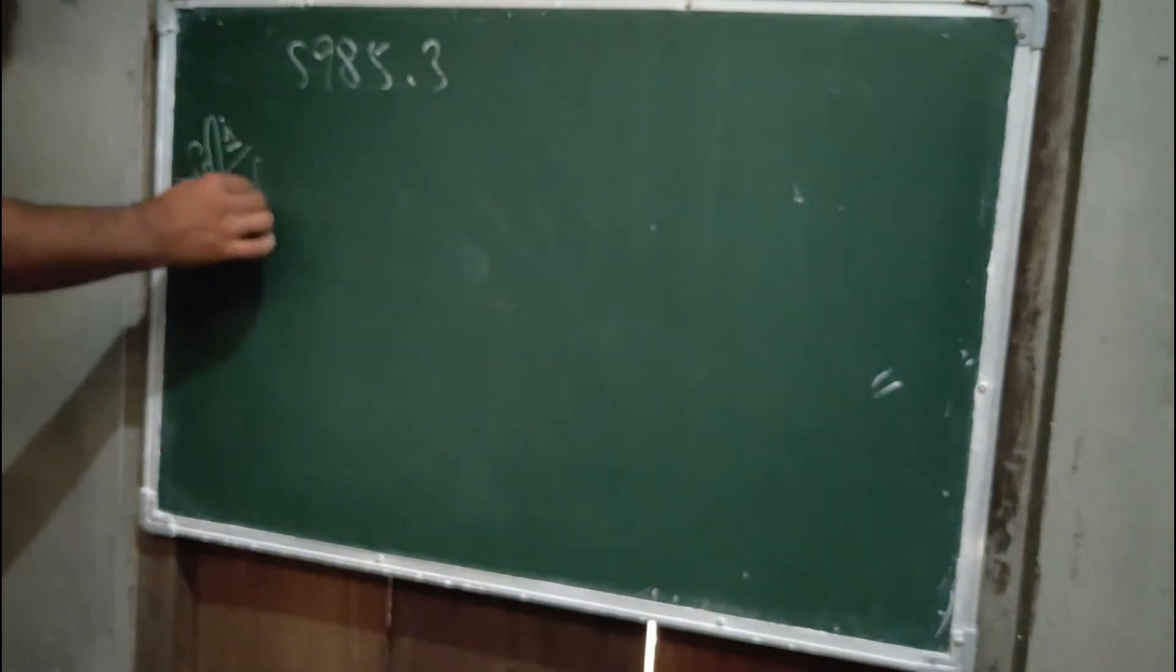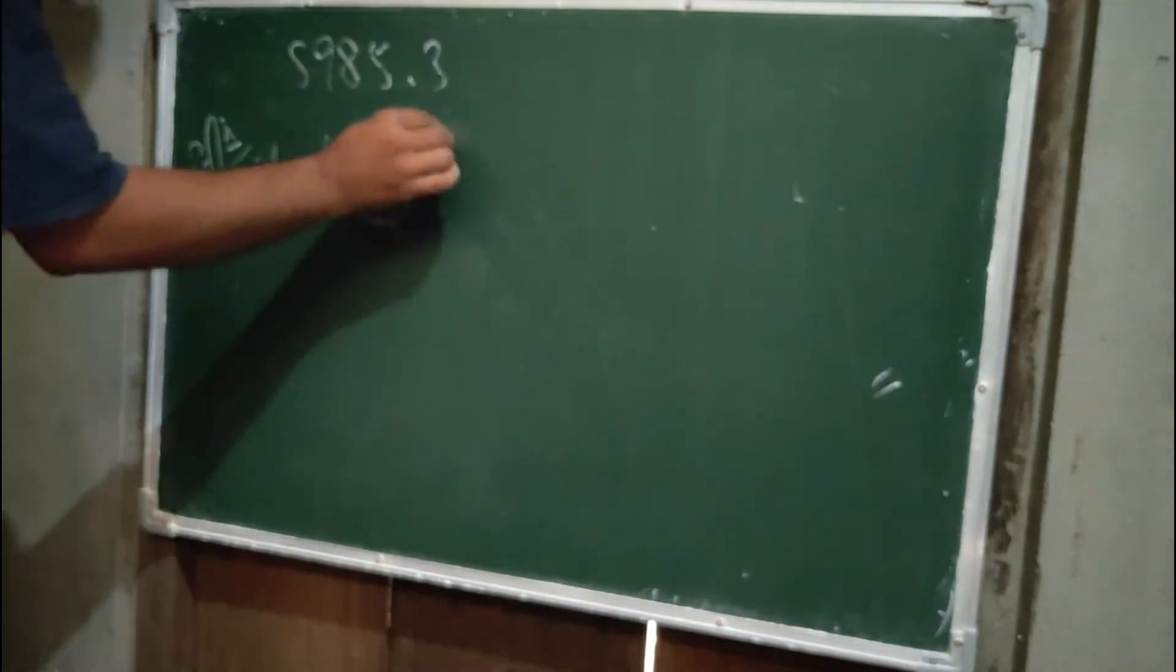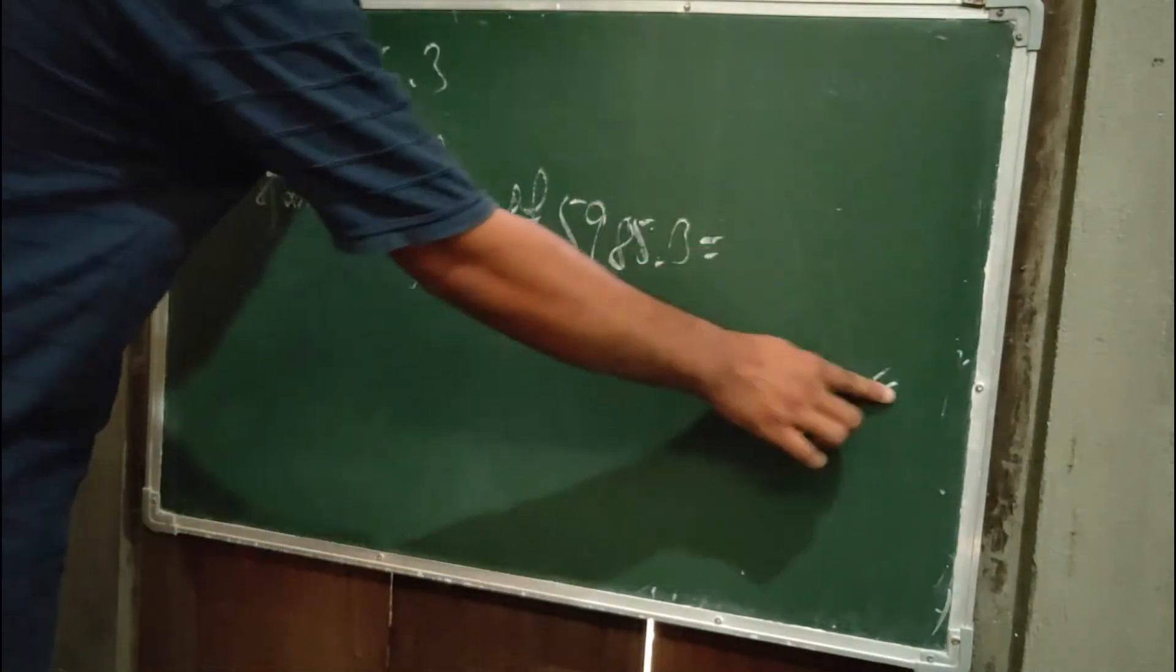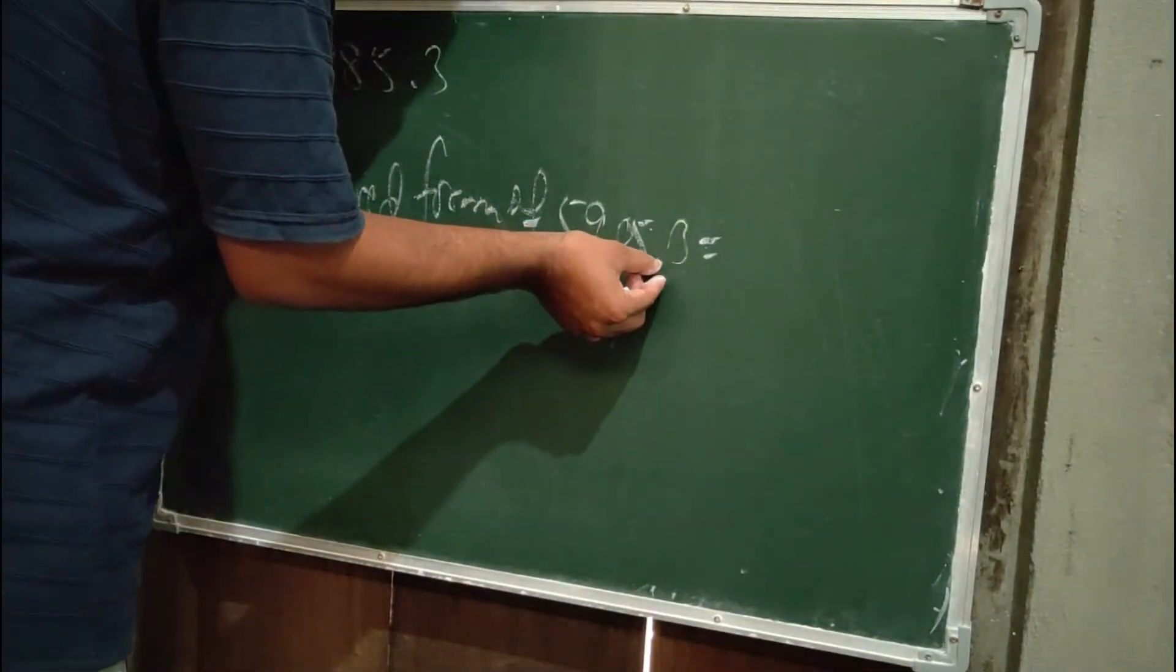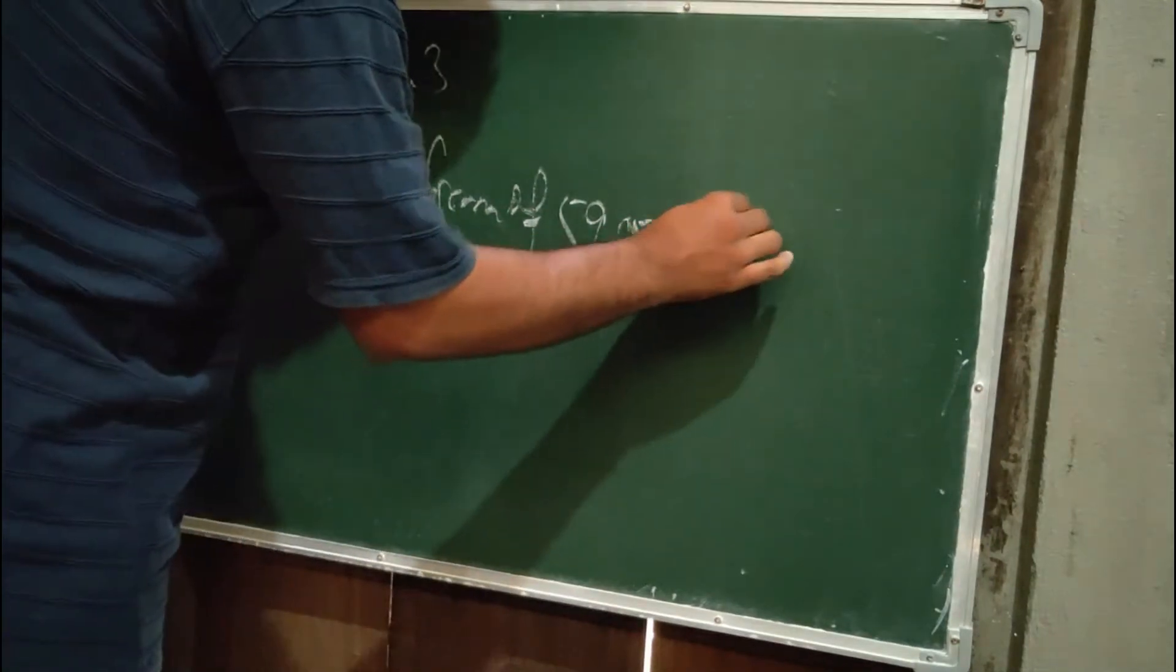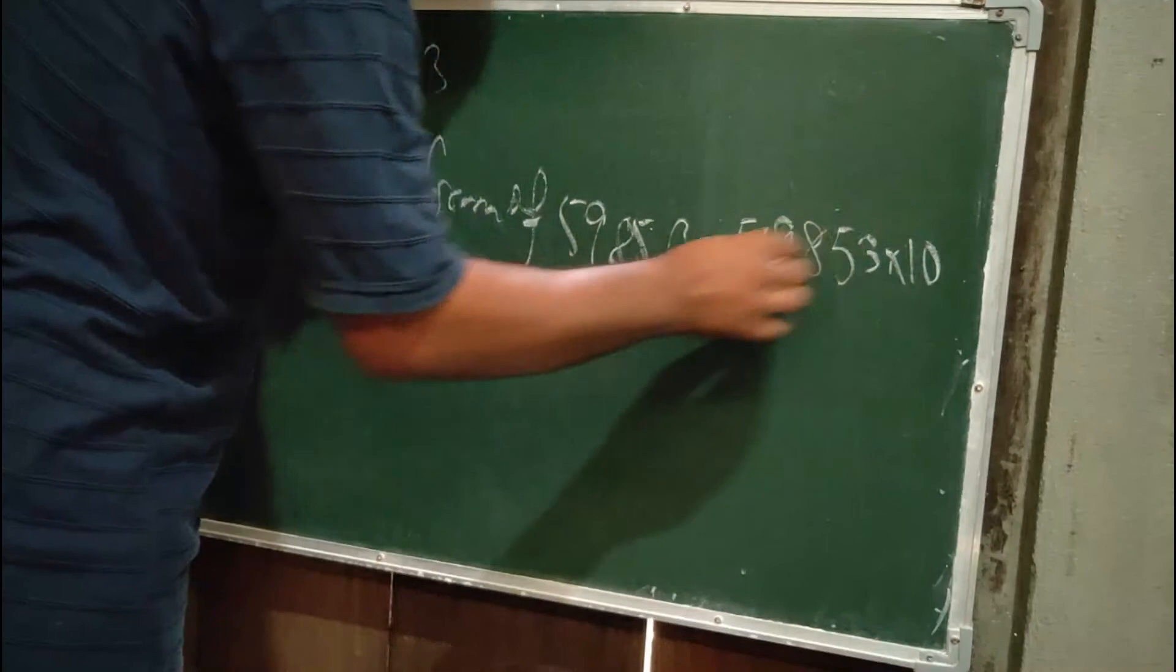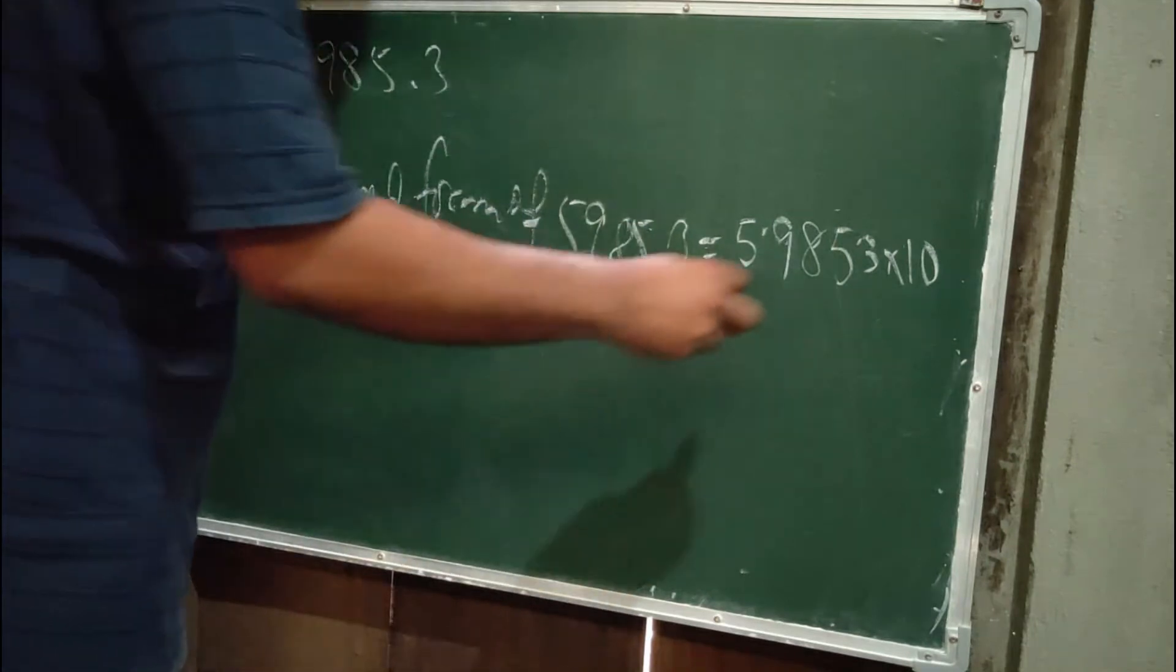Standard form of 59585.3: First, shift the point 3 digits left, giving 5.95853 × 10^3 because we're bringing the point 3 digits forward.